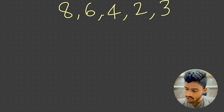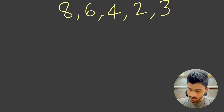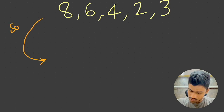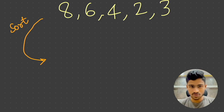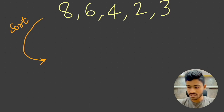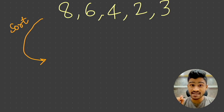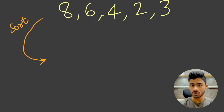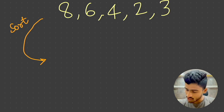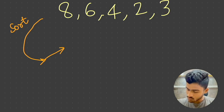We will sort that array. There are two kinds of sorting: ascending order and descending order. Here we will talk about ascending order. In ascending order, smallest comes first — so 2 is first, then 3, then 4, then 6, then 8. In descending order, largest comes first — 8, then 6, down to 2.